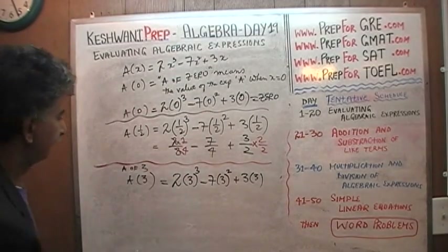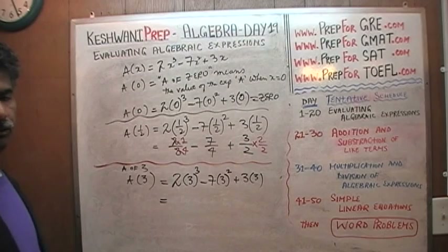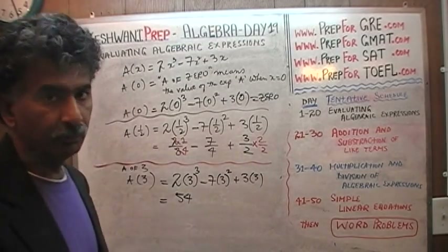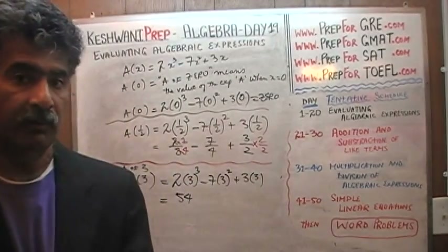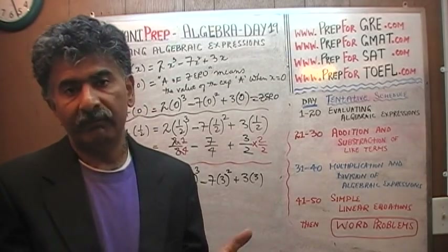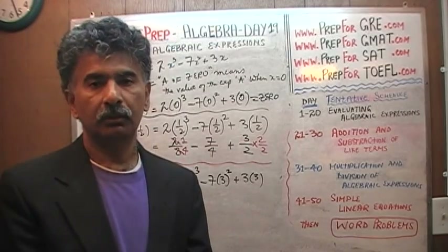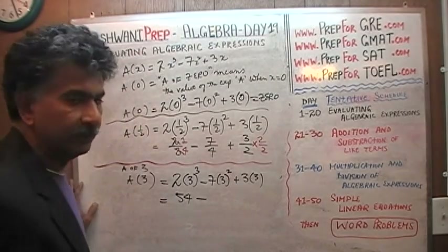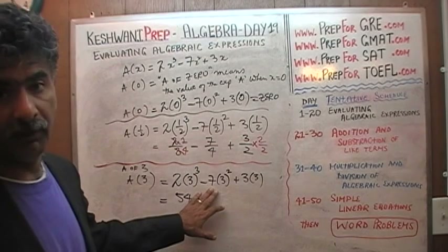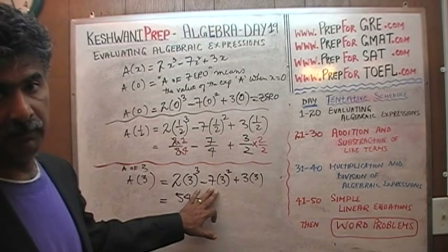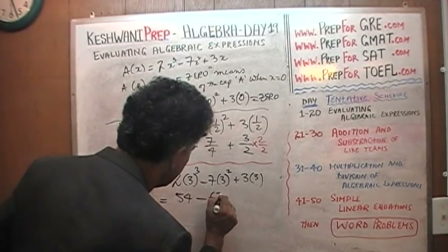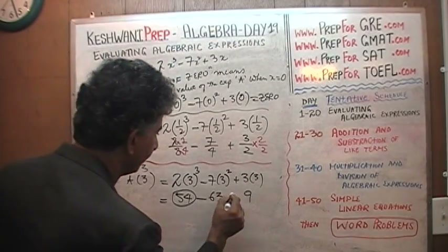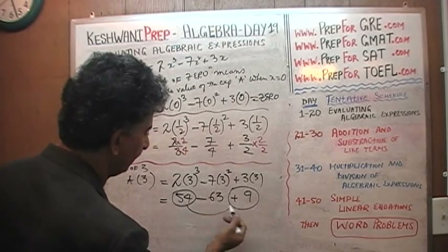So: 2(3³) minus 7(3²) plus 3(3). Three cubed is 27, and 2 times 27 is 54 — because two 25s make 50, and two extra 2s make 4, so 54. Three squared is 9, and 9 times 7 is 63 — because 10 times 7 is 70, minus 7. Plus 3 times 3 which is 9. So 54 minus 63 plus 9: 54 plus 9 is 63, and 63 minus 63 is zero.